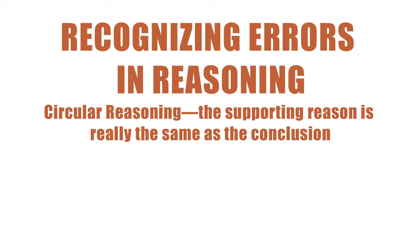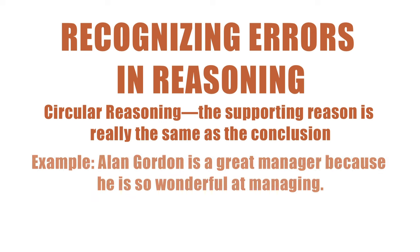One common fallacy is called circular reasoning. In an argument using circular reasoning, the supporting reason is really the same as the conclusion. Such evidence is illogical. Here is a simple and obvious example: 'Alan Gordon is a great manager because he is so wonderful at managing.' The supporting reason — he is so wonderful at managing — is really the same as the conclusion — Alan Gordon is a great manager. We still do not know why he is a great manager. No real reasons have been given. The statement has merely repeated itself.